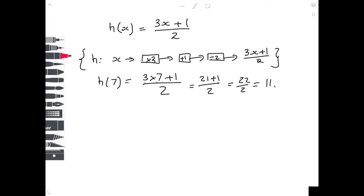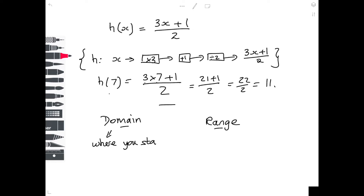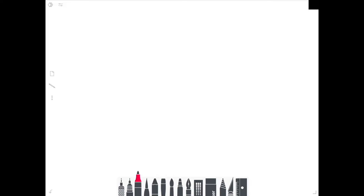Now, associated with functions there are some technical words you need to be aware of. The numbers that you start with are called the domain. To help you remember: 'domain' is French for house, so your house is where you start. The number that comes out the other end is called the range — a range is when you explore and go further out. So the domain is where you start and the range is where you finish.